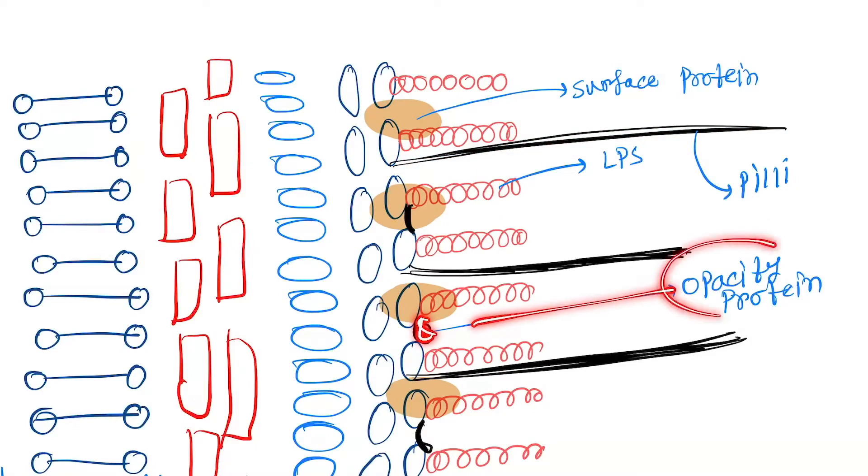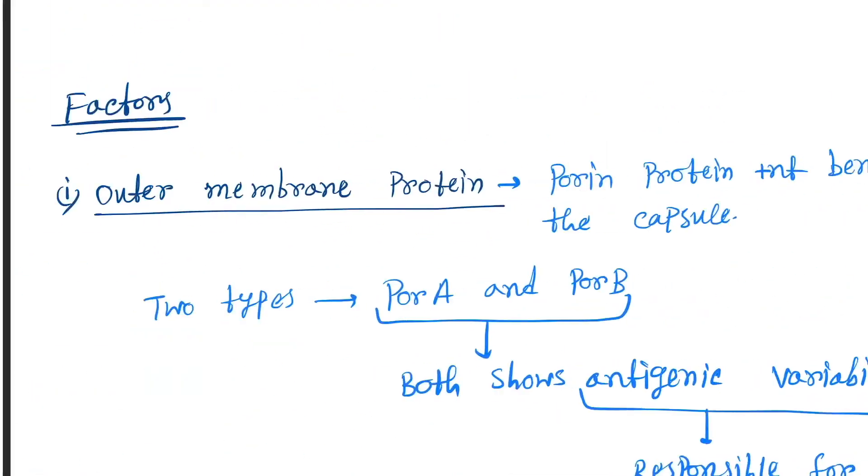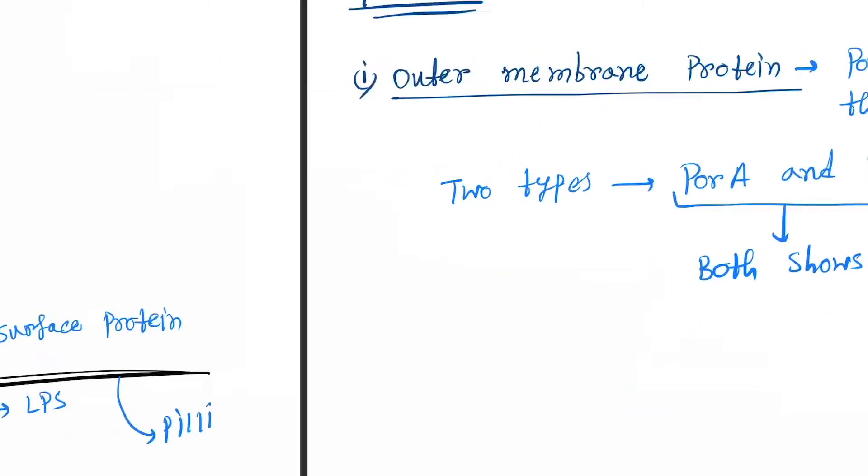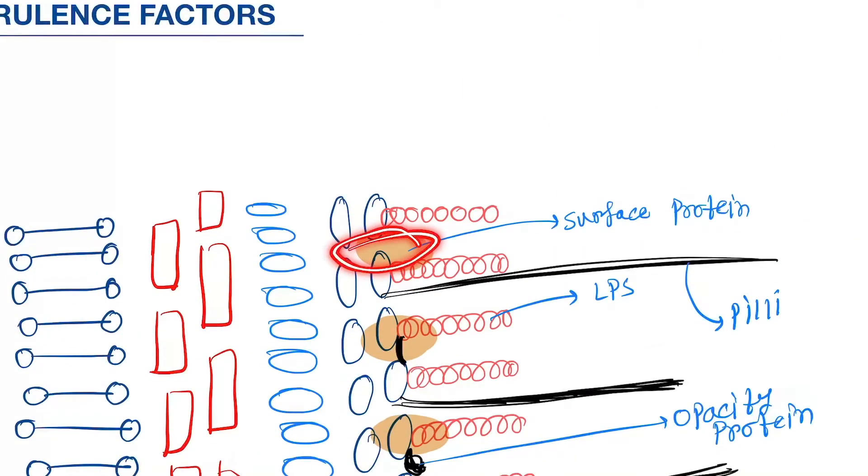These are the opacity proteins. Now learn them one by one. First one is the outer membrane protein, so here you can see the surface proteins.